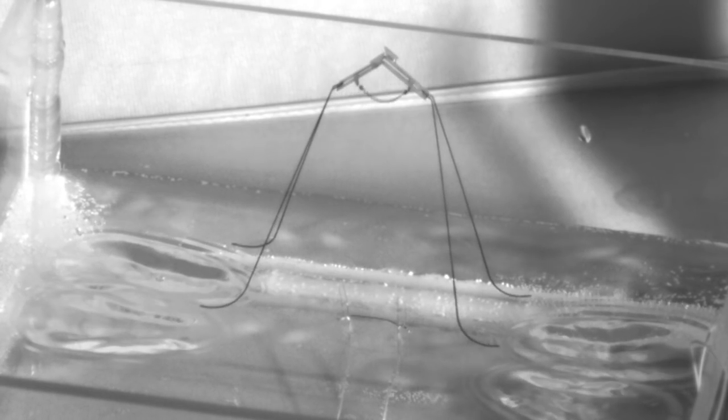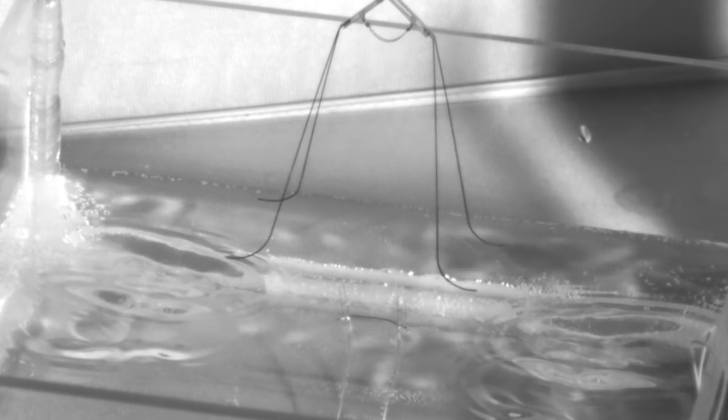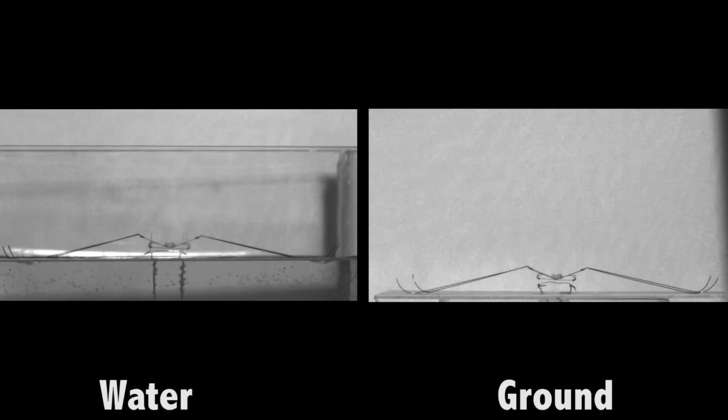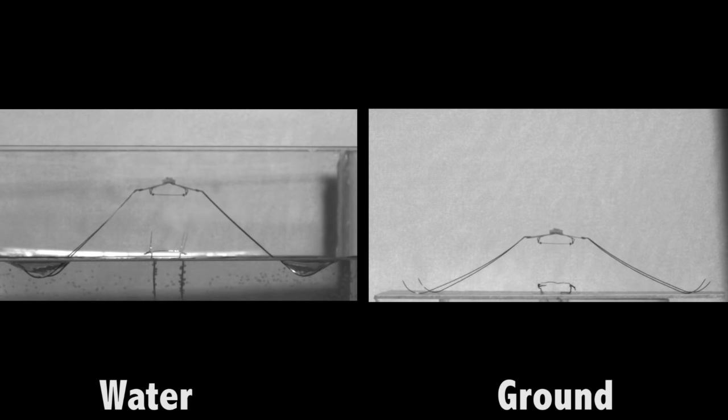The researchers devised a bio-inspired jumping mechanism called a torque reversal catapult mechanism, which applies small force initially, and the force increases gradually, and thereby they can maximize the momentum transfer without exceeding the maximum surface tension force.